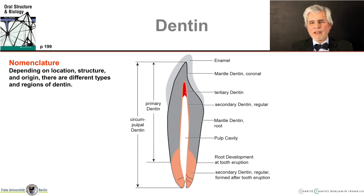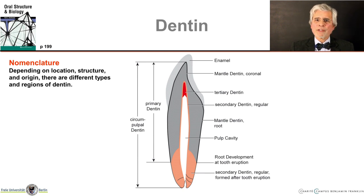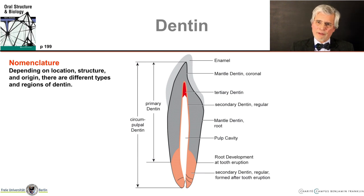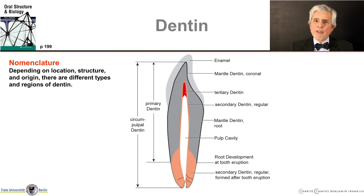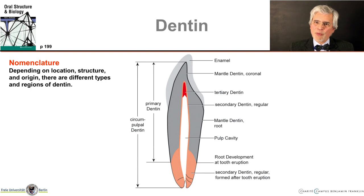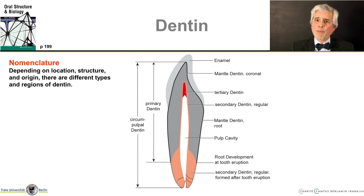A distinction is made between primary dentine and secondary dentine. Primary dentine is all the dentine that was formed before the tooth erupted into the oral cavity — shown in grey here. And pink is the secondary dentine, which is formed after the tooth has erupted, meaning the last quarter of the root is only formed after the tooth has erupted. However, dentine continues to be deposited on the wall of the pulp cavity after tooth eruption also, which is why you can see the thin pink strip here.